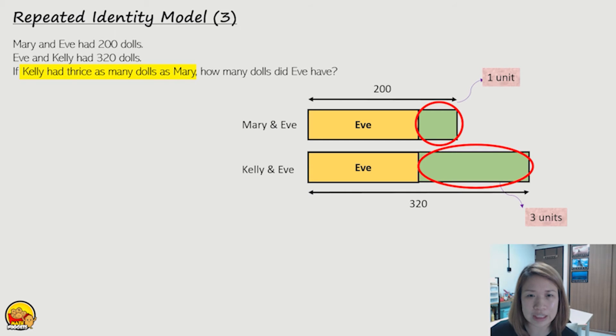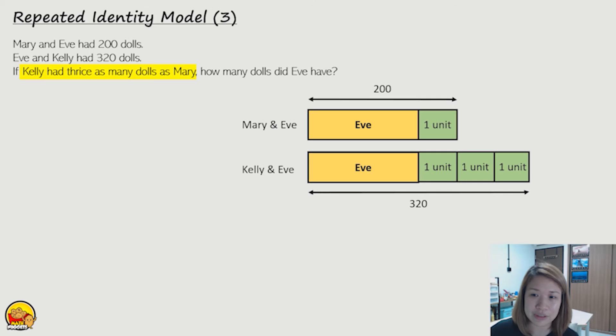So in that case, I can actually cut up the back part. I can cut Kelly's portion up into three equal units and make it look like that. So Mary would be one unit and Kelly would be three units.